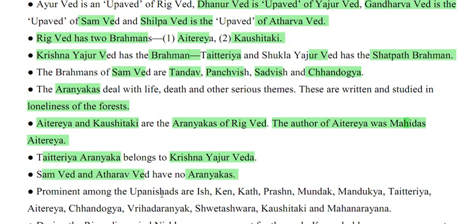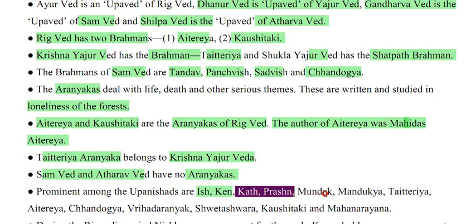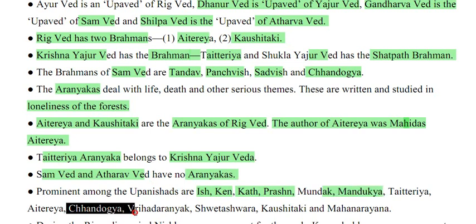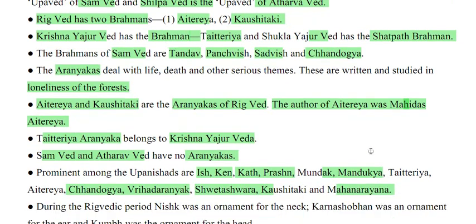Prominent among the Upanishads are: Is, Kain, Kaat, Prash, Mundak, Taitre, Atre, Chandogya, Vrihadranak, Shvetashwar, Kausitki and Mahanarad.